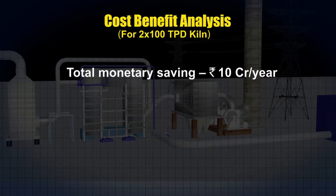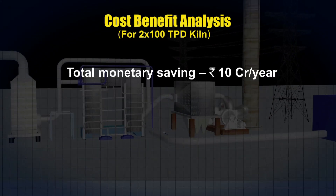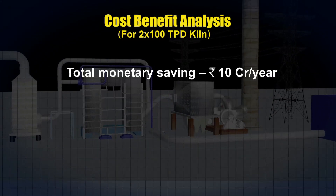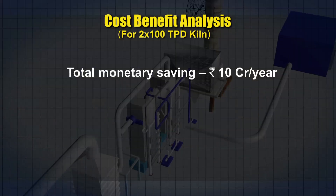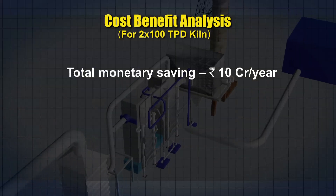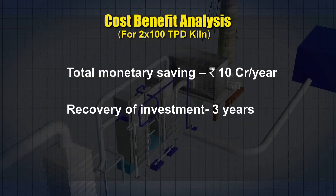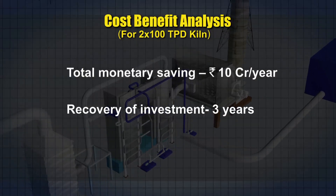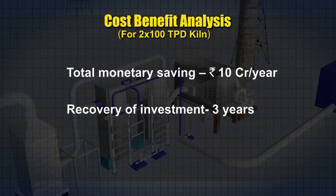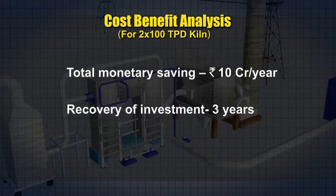Thus, the total monetary saving due to installation of the power plant works out to around 10 crore rupees a year. The investment can be recovered within a period of nearly three years.